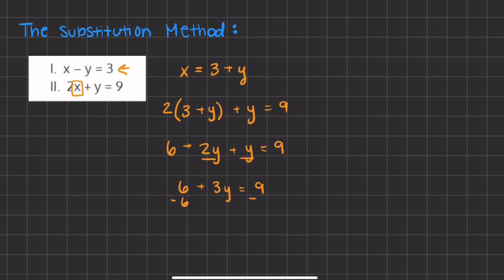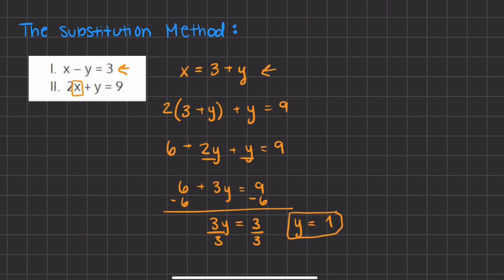We subtract 6 from both sides to isolate y, giving us 3y equals 9 minus 6, which is 3. Then we divide both sides by 3 to completely isolate y, and we get y equals 1. Now that we know the value of y, we plug it into our expression for x: x equals 3 plus y, which is 3 plus 1, giving us x equals 4. So x equals 4 and y equals 1 — those are our two values, found using the substitution method.